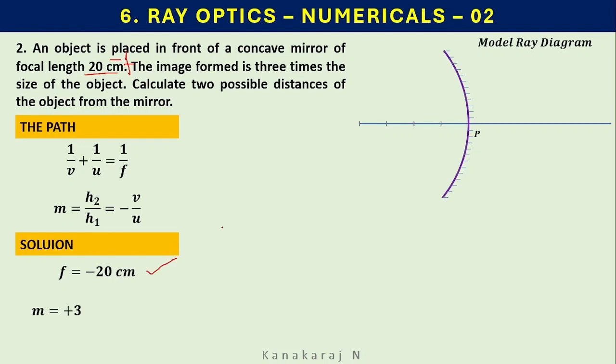There are two magnifications: one is plus 3 and another one is minus 3. Let us consider m is plus 3. m is plus 3 means the image is virtual. The meaning of plus 3 is the image is virtual in nature. That means the distance of the object is less than the focal length of the concave mirror.